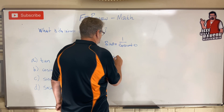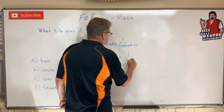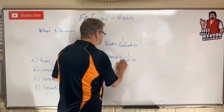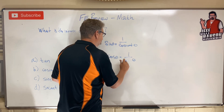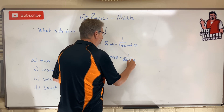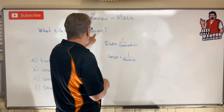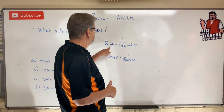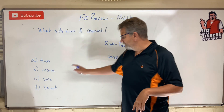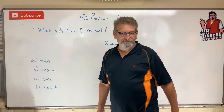Cosine is equal to 1 over... dang it, I did it wrong — secant. So the inverse of cosecant is sine. The answer is C. Easy one.